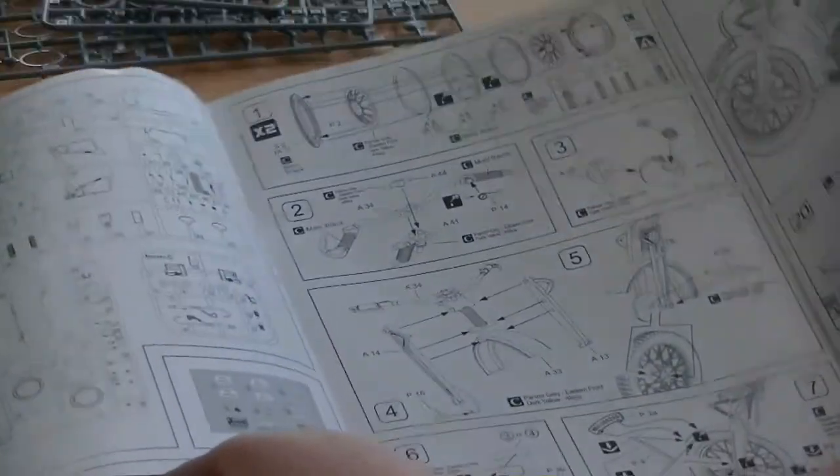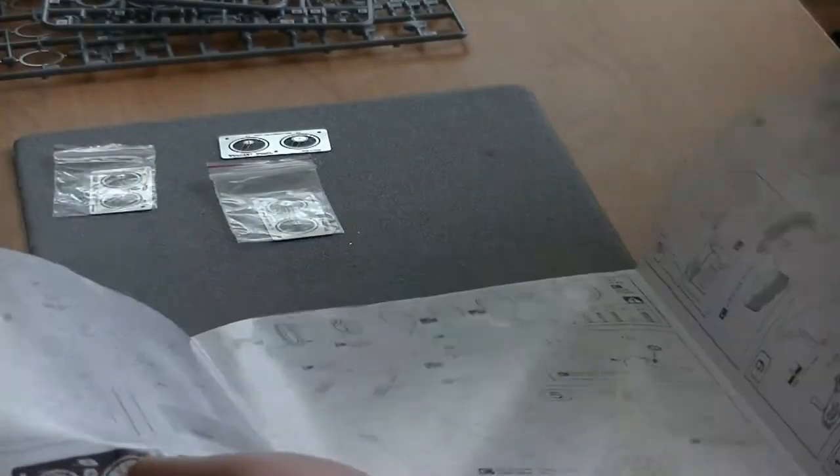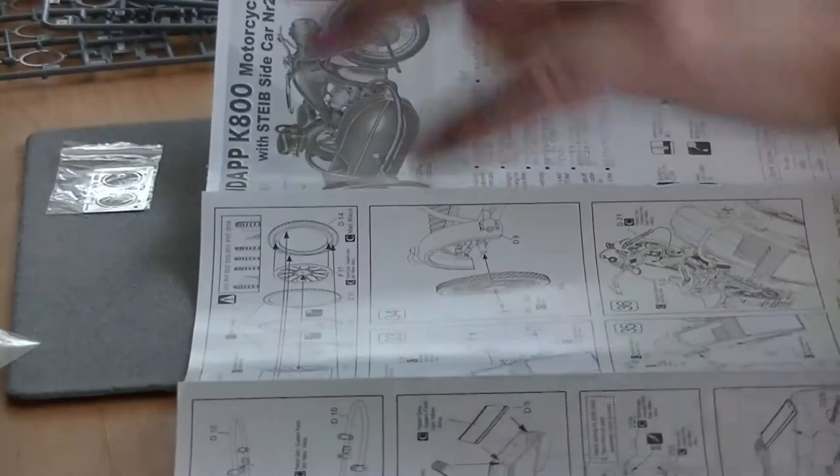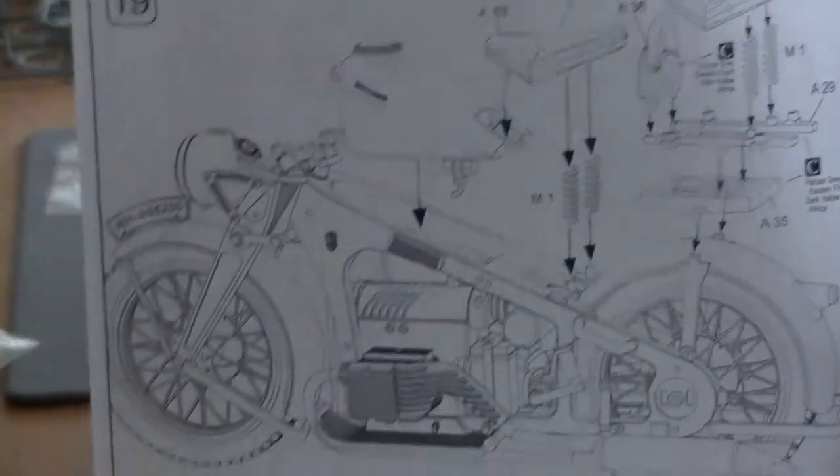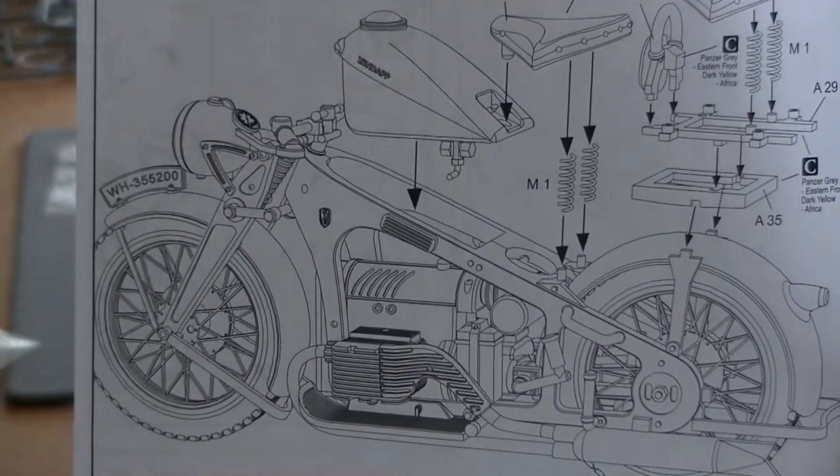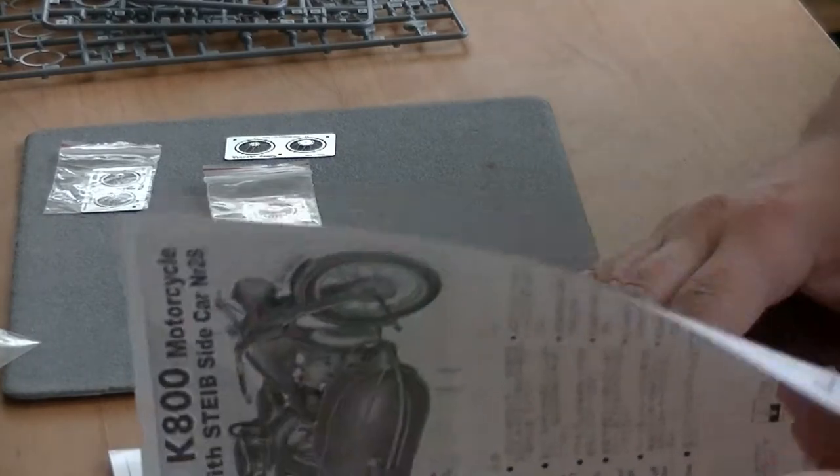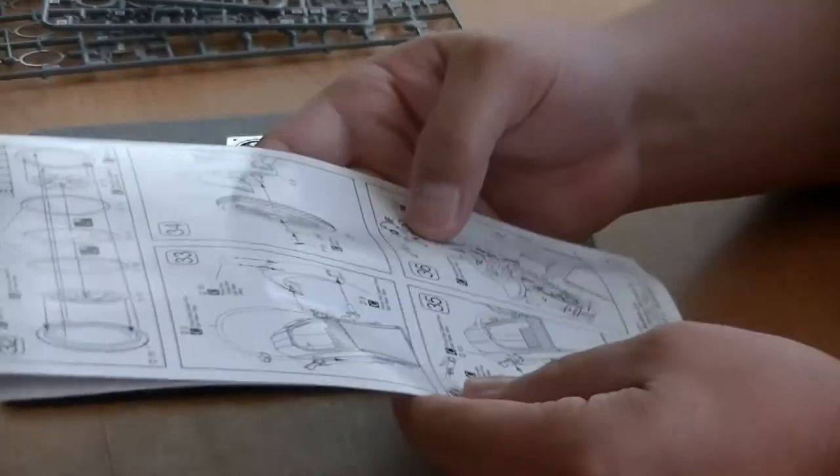Instruction sheet has to be folded out like this, and then you get all the steps through step number 36 to finish the bike. Just a few steps, a few parts per step, so it's easy to follow. It's a little bit like Tamiya style instructions sheet, which is not bad at all. Clear, nice. All instructions should be made like that.